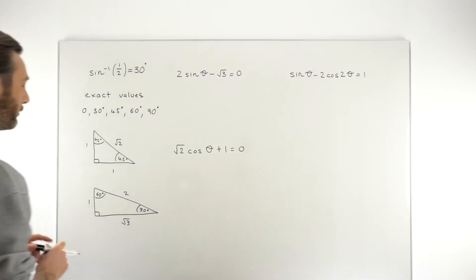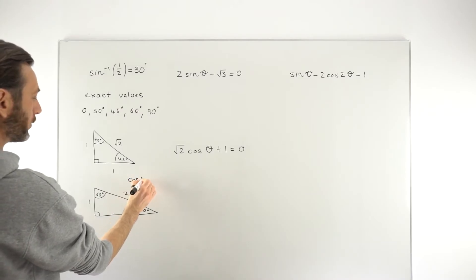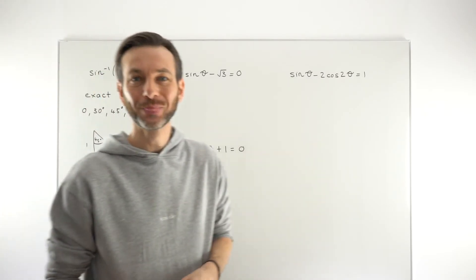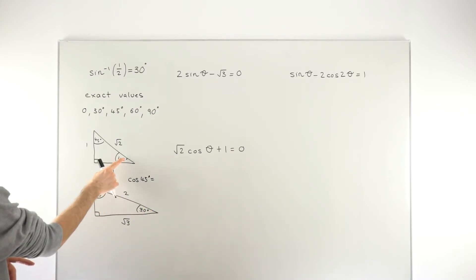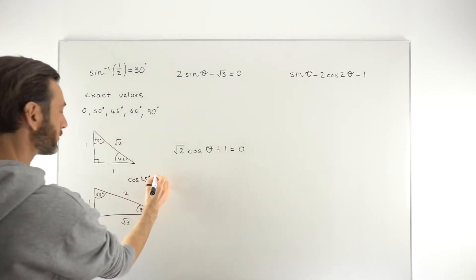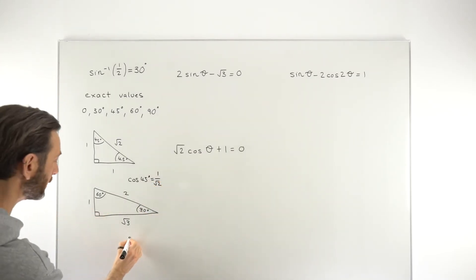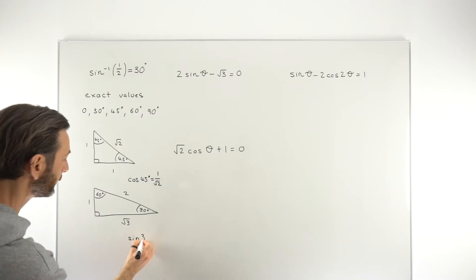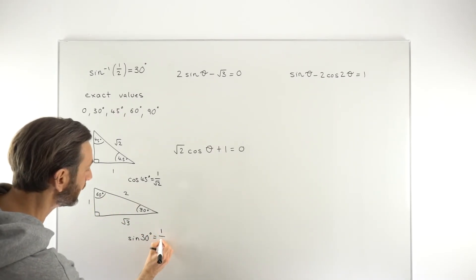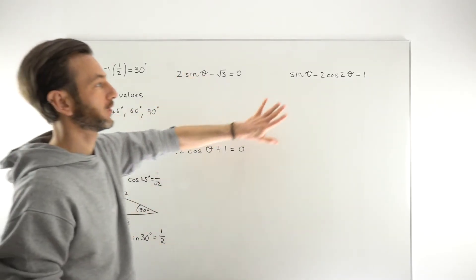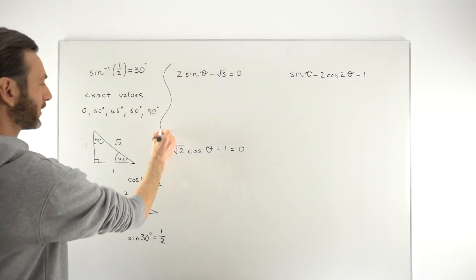That's where the exact values come from, because we can now do SOHCAHTOA on these triangles. For example, if I wanted to work out the cosine of 45 degrees: cosine is adjacent over hypotenuse. Choosing that angle, adjacent is 1 and hypotenuse is root 2, so cos 45° = 1/root 2. Similarly, for the sine of 30 degrees: sine is opposite over hypotenuse, which is 1 over 2. That's the method we'll use for the examples.